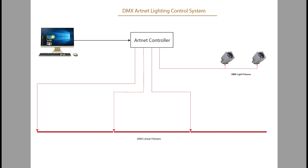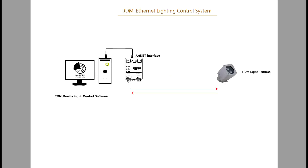Art Net is ideal for larger projects where you need to control media from a computer — connecting from the computer to controllers and then to the light fittings. It is also widely used for live events, where all lighting is controlled from a computer. There is also another control system called RDM.